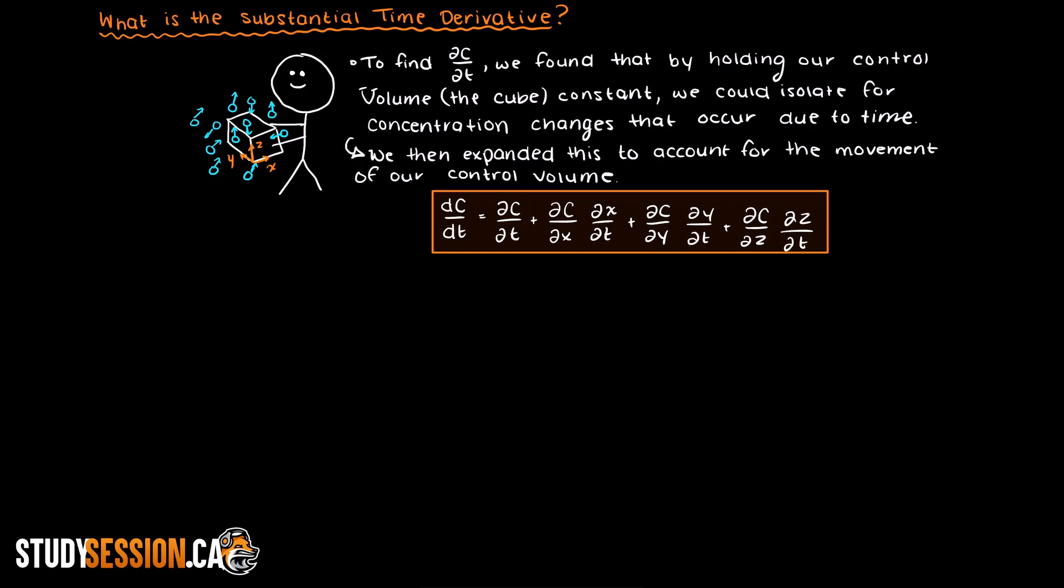Now that we are all caught up, let's add one more complication. Let's say that we are now holding our cube, but the air flow in the room is pushing us and all of the surrounding spheres in a direction at some constant velocity. Let's call this velocity alpha.